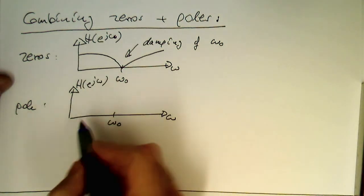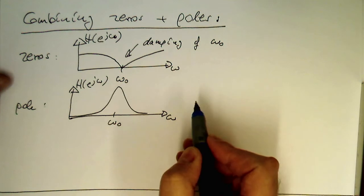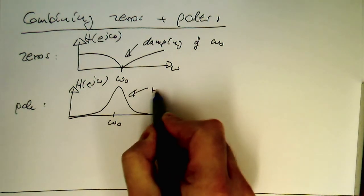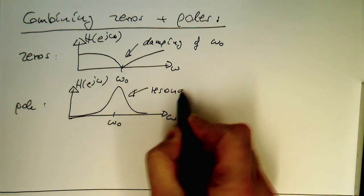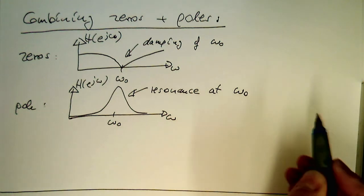So then the pole does, interestingly, just the opposite. So the pole creates a resonance here at this point and at omega zero.